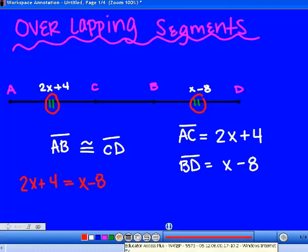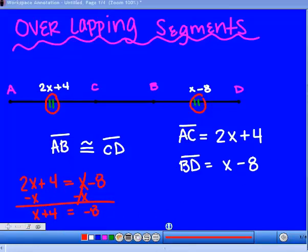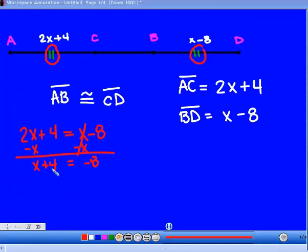I'm going to move this x over by subtracting since it's a positive x, so x cancels out. That leaves me with 2x minus 1x, which is x, plus 4 equals negative 8. Don't forget the negative—it makes a difference. Then I'm going to move this plus 4 over with the opposite operation, which is to subtract.